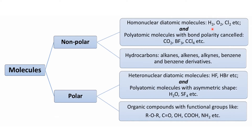Examples of homonuclear diatomic molecules include H₂, O₂, and Cl₂. Polyatomic molecules in which the bond polarity gets cancelled because of the geometry are also non-polar — for example, carbon dioxide, BF₃, CCl₄, etc. Other non-polar molecules include hydrocarbons such as alkanes, alkenes, benzene, and benzene derivatives.